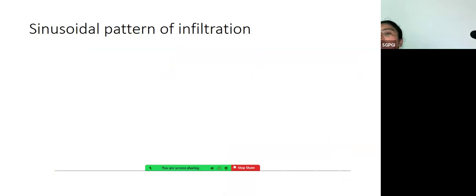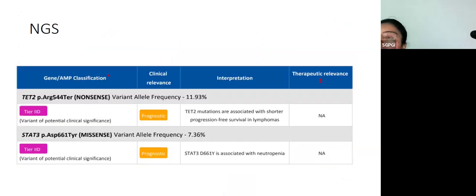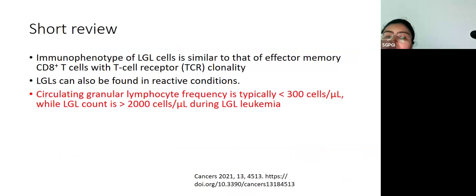So what do we have? T-LGL. T-LGL has a sinusoidal pattern of infiltration on the bone marrow. If you do CD3 on the bone marrow, it feels like it's sort of moving around the adipose tissue or within the vessel. This is the cytotoxic perforin which is positive. Incidentally, for this patient, an NGS was sent which showed a STAT3 mutation. The variant allele frequency came out to be low, but this also supported the LGL leukemia category.